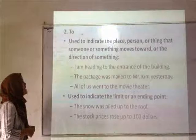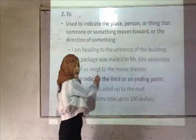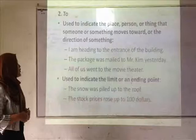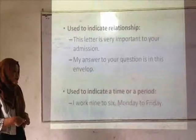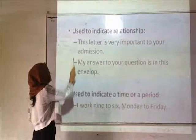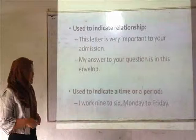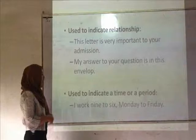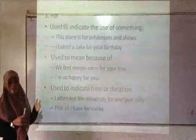A preposition which has special uses is 'to'. First, 'to' is used to indicate the place, person, or direction that someone or something goes towards. For example: I am heading to the building — 'to' indicates the place. Second, 'to' is used to indicate the starting or ending point: the snow was filled out to the room — 'to' indicates the ending point. Third, used to indicate relationship: this letter is very important to your admissions — 'to' indicates the relationship between the letter and admissions. Fourth, used to indicate a time or period: I work from Monday to Friday.